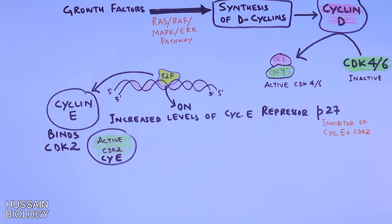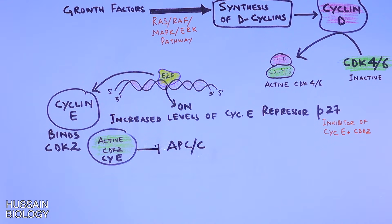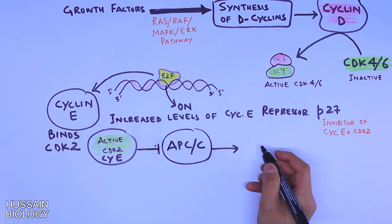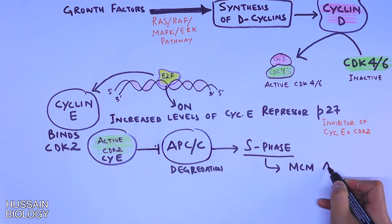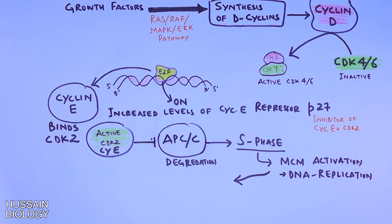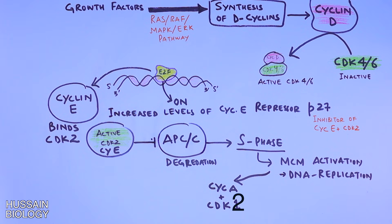The APC/C is repressed initially in the early phases of the cell cycle — remaining inhibited in G1, S, and G2 phases. In S phase, DNA replication occurs with activation of MCM, and we see the interaction of cyclin A and CDK2. After that, DNA replication is completed.